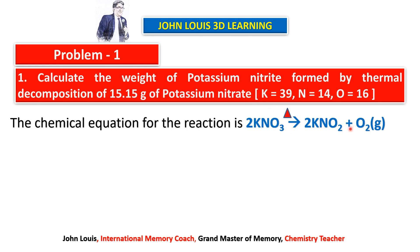In some problems this equation will be given, and if not given we should be able to complete and balance it. Mostly they will give you the equation, but if not we should be able to write it. Here you need to learn that when potassium nitrate is heated, potassium nitrite plus oxygen is formed. We already know how to balance it, so the balanced equation is given.